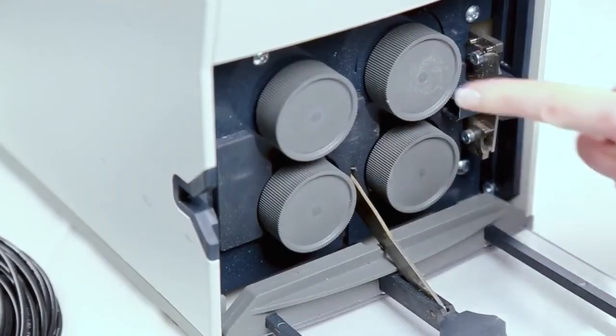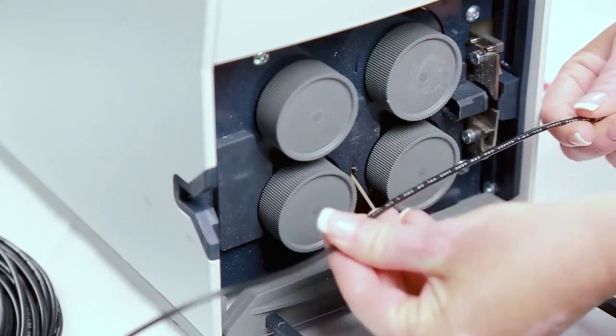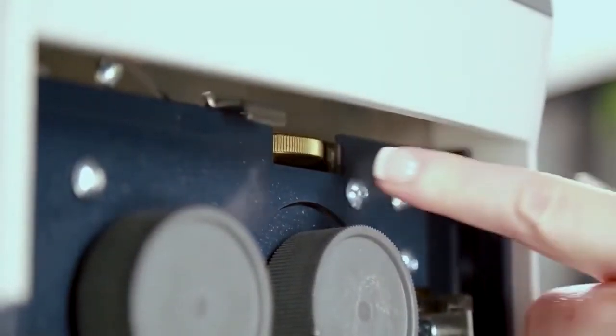Check if the rollers are worn and replace them. If the insulation on the wire is very hard, the metering roller can be exchanged with steel rollers. Set the clamping pressure with the adjusting wheel.